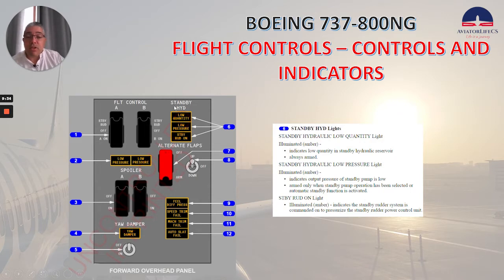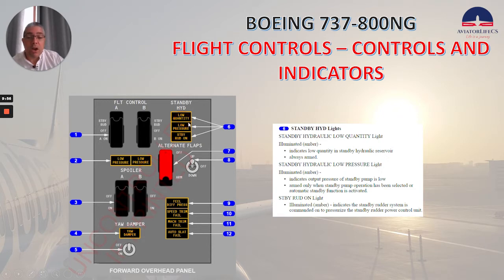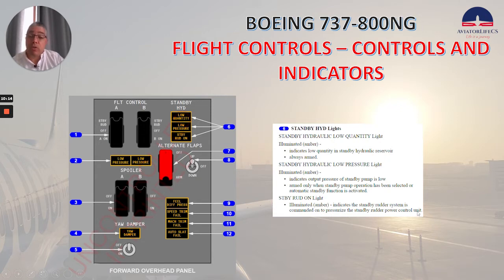We have the standby hydraulic lights. The standby hydraulic low-quantity light — illuminated amber — indicates low quantity in the standby hydraulic reservoir; it's always armed. The standby hydraulic low-pressure light — illuminated amber — indicates output pressure of the standby pump is low; armed only when standby pump operation has been selected or automatic standby function is activated. The standby rudder on light — illuminated amber — indicates the standby rudder system is commanded on to pressurize the standby rudder power control unit.